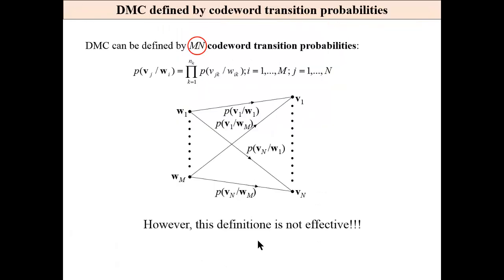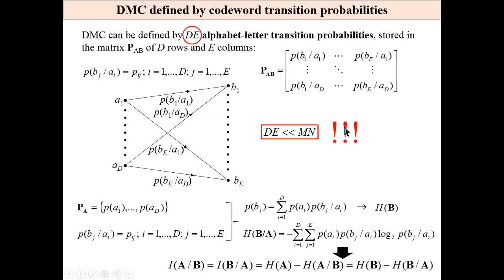The channel can be described by the conditional probabilities between codewords and output sequences, the product of mn conditional probabilities, but these descriptions are absolutely ineffective. Instead, we will be using such a description: input is a source alphabet, input alphabet letters and output is a source of output alphabet letters. If so, we have only product of dE conditional probabilities, which is much, much less than product of mn.